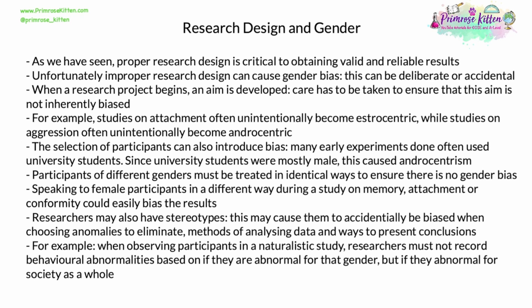Proper research design is absolutely critical to obtaining valid and reliable results. Unfortunately, improper research design can cause gender bias — often completely accidental, but it can also be deliberate. Care has to be taken to ensure that the aim, the very foundation of the research, is not inherently biased. For example, studies on attachment often unintentionally become oestrocentric, while studies on aggression often unintentionally become androcentric. The selection of participants can also introduce bias. Many early experiments used university students as participants, and more than 50 years ago university students were predominantly male — causing androcentrism that was accidental but caused by inherent bias in the participant sample.